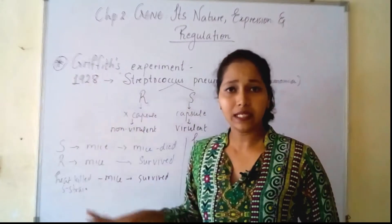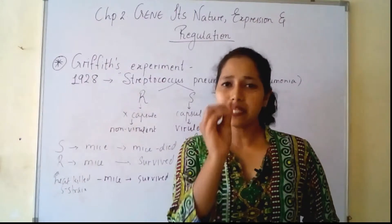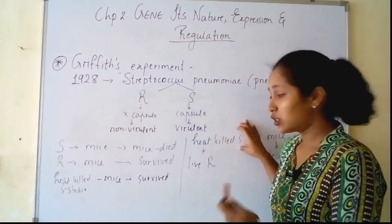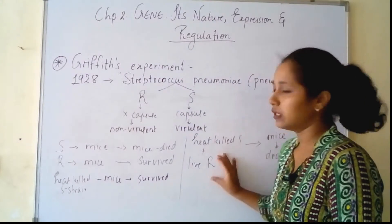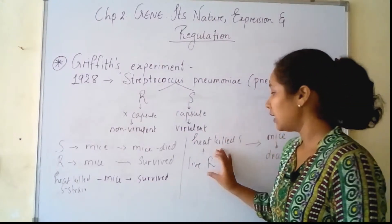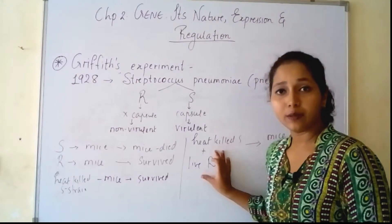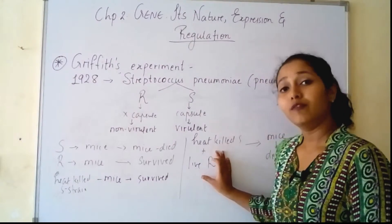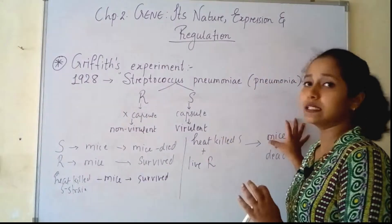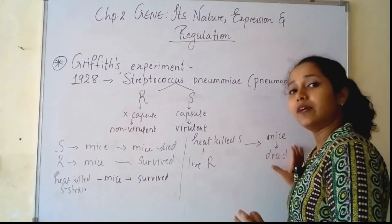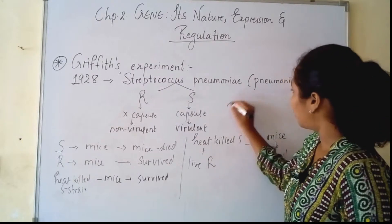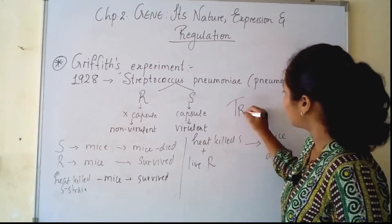Griffith concluded that there might be something in the smooth strain which is changing something in the R strain — converting the non-virulent R type into a virulent type, and then it is causing disease in the mice, finally leading to their death. So this principle was called transformation.